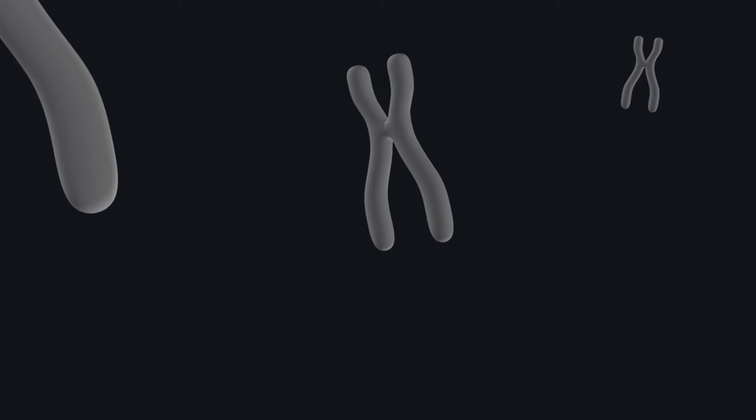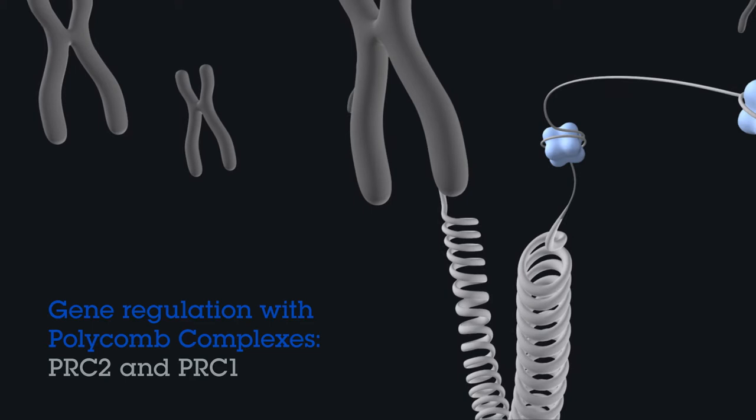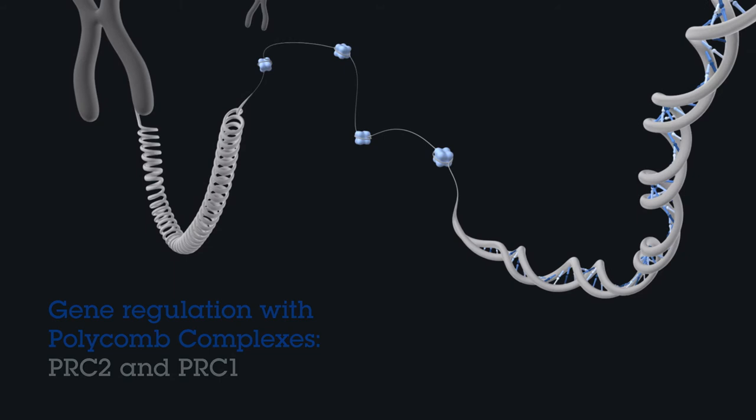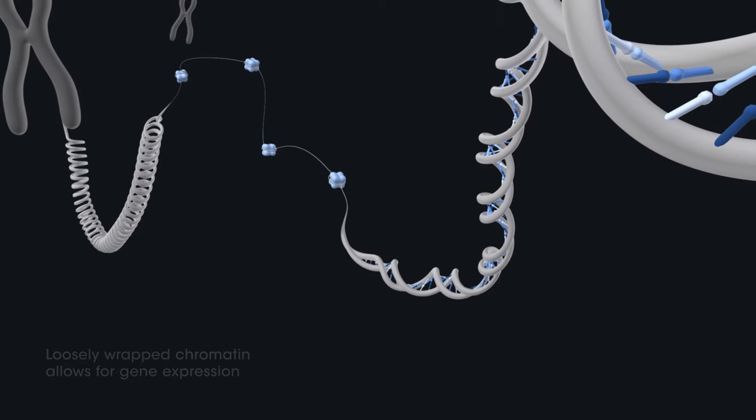Genetic material in our cells is stored in the form of chromatin, which consists of DNA wrapped around proteins called histones. Tight wrapping helps to keep genes turned off and looser wrapping allows for gene expression. This is critical in cell differentiation and maintenance.